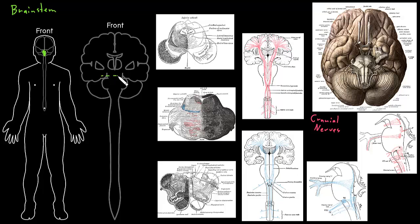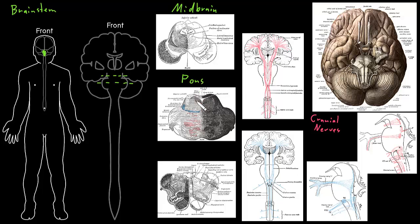Let's pretend we're cutting through the midbrain right here and looking at it from the top. This would be a section of the midbrain — it's got these big parts that stick out the front and some little bumps on the back. Don't worry about the names of any of those right now. And if we take a section through the pons and look down at it from the top, this would be a view of a section of the pons — it's got this really big part that sticks out the front.